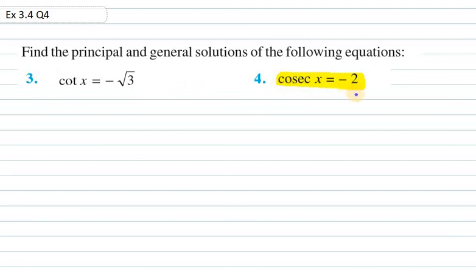The problem states cosec x equals minus 2. Now as we know that there is no general solution for cosec x, therefore we need to find it in terms of sin.